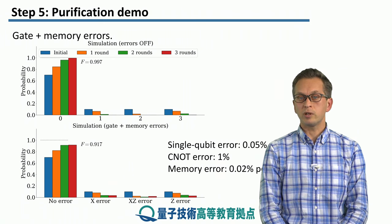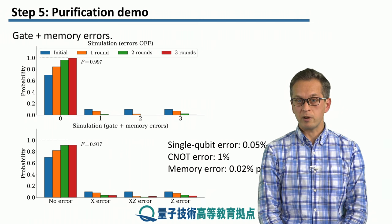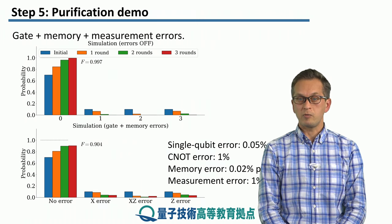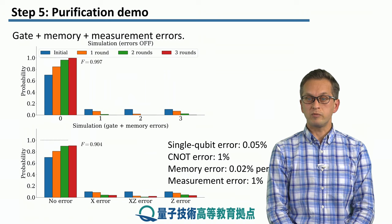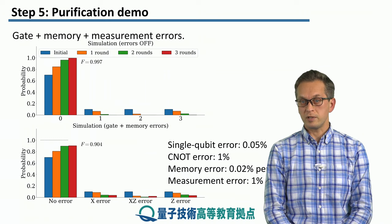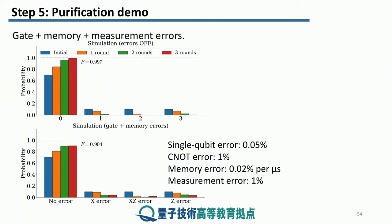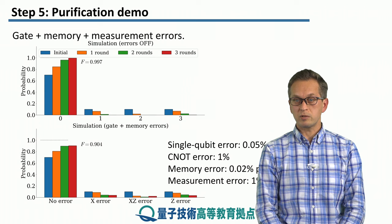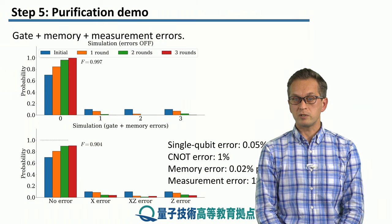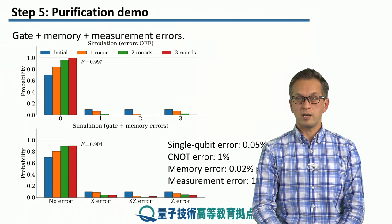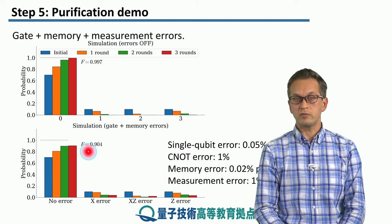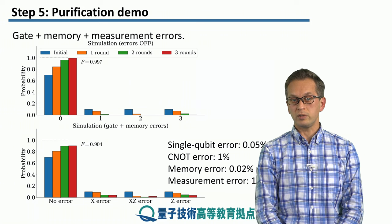Finally, we're going to add measurement error on top of gate error and memory errors. We set the probability for measurement errors to be 1%. As we said in the previous case, it doesn't really matter whether you use method one or method two for simulating measurement errors because our measurements are destructive. And again, we see that the fidelity has dropped somewhat further, close to 0.9.